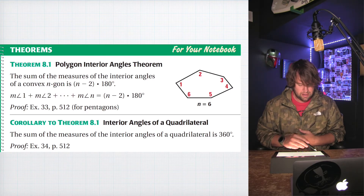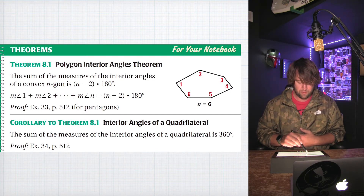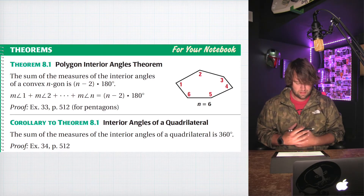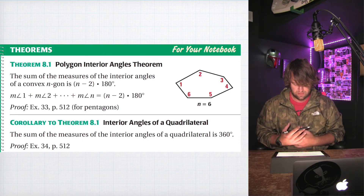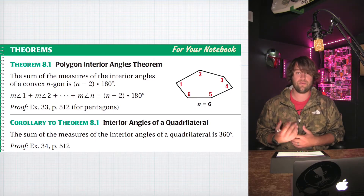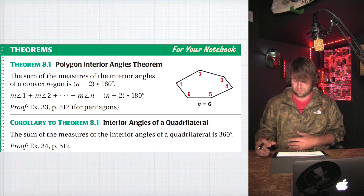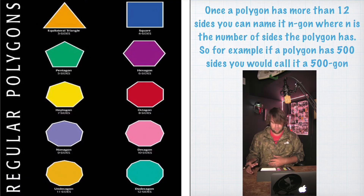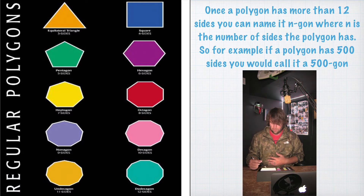There's also a corollary to Theorem 8.1 — the Interior Angles of a Quadrilateral — which says the sum of the measures of the interior angles of a quadrilateral is 360 degrees.